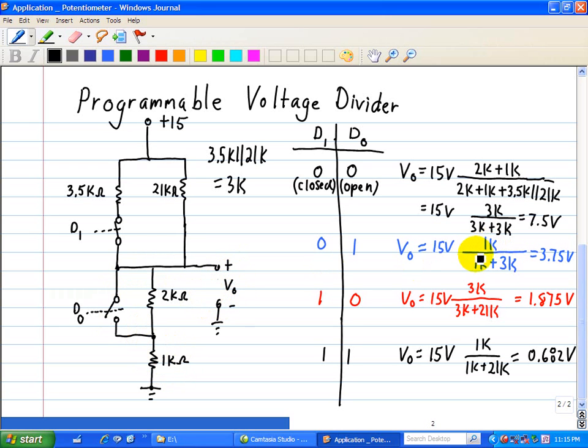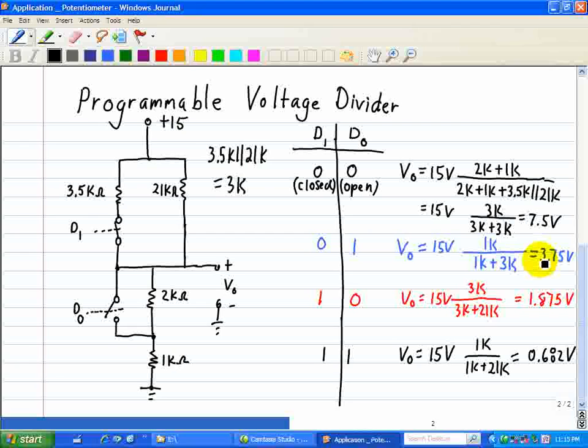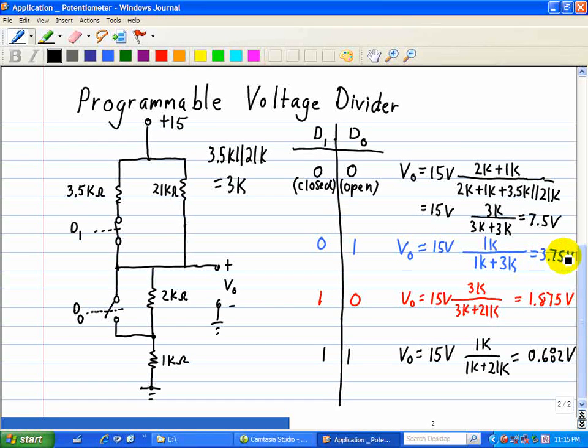So it would be just 1k divided by, we still have this parallel combination of 3k plus the 1k, times 15 volts, which results in an answer of 3.75 volts for the state 0,1.